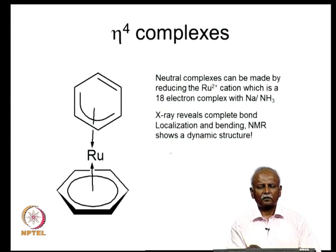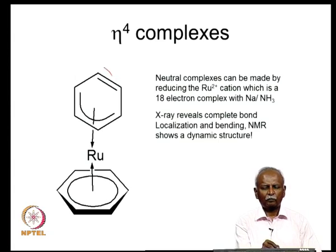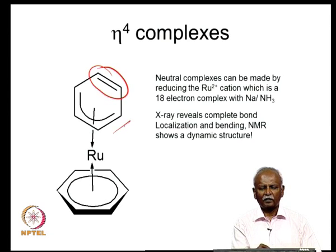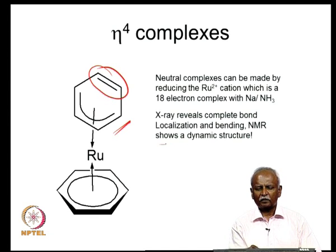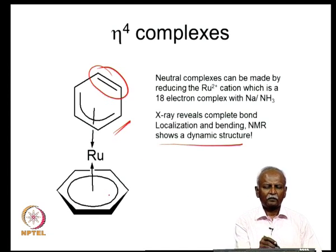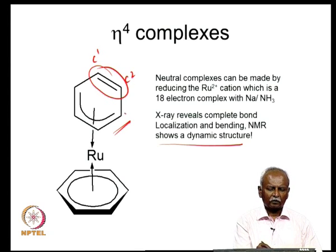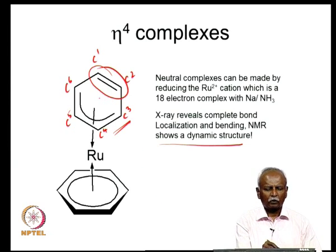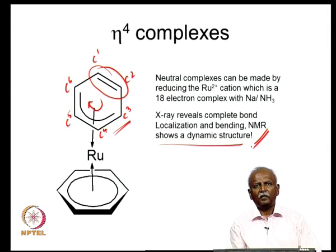The x-ray crystal structure of this molecule reveals that this double bond is completely moved away from the plane of the 6-membered ring, so there is no conjugation with the 4 pi electrons. The NMR structure, however, is dynamic — C1 and C2 rapidly interconvert with C3, C4, and C5, so there is rapid rotation resulting in an NMR structure that suggests all carbons are equivalent.